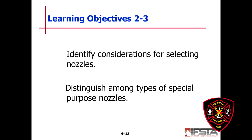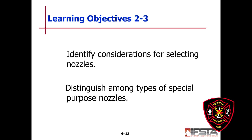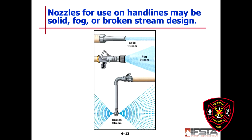Our next learning objective is to identify considerations for selecting nozzles and to distinguish among the different types of special purpose nozzles. Nozzles for use on hand lines may be solid stream or broken stream design. Here is shown a solid stream or smooth bore, and these are broken stream.